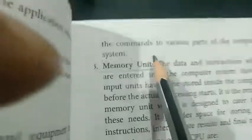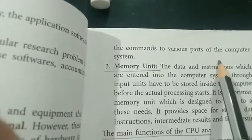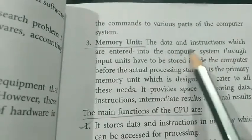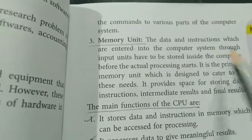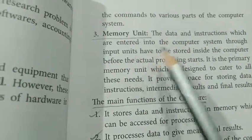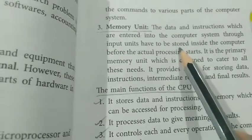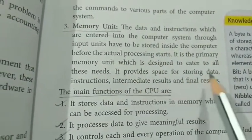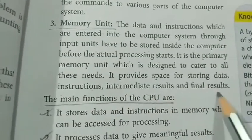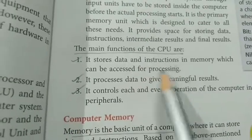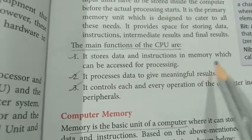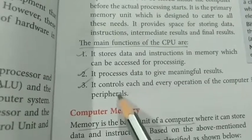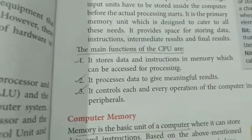The memory unit is the place where data and instructions entered through input devices — mouse or keyboard — are stored. Storage may be on a hard disk, RAM, or ROM. It provides space for storing data, instructions, intermediate results, and final results. The main functions of the CPU are: storing data and instructions in memory for processing, processing data to give meaningful results, and controlling every operation of the computer's peripherals.